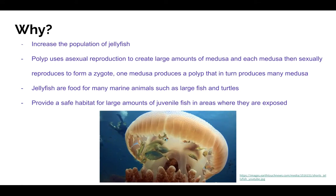The probable reason jellyfish go through this alternation of generations is to increase the population of jellyfish. Polyp and medusa alternate successfully since the polyp uses asexual reproduction to create large amounts of medusa, and each medusa then sexually reproduces to form a zygote. The zygote then grows into a larva, and the larva attaches itself to a surface and finally forms a new polyp. This cycle allows for the creation of more and more jellyfish, since one medusa produces a polyp that in turn produces many medusa, each producing another polyp.